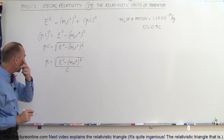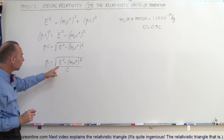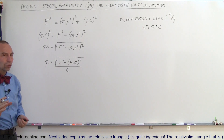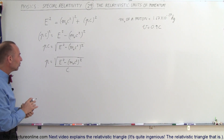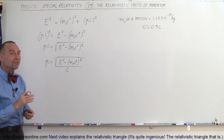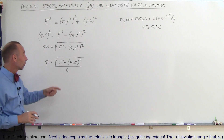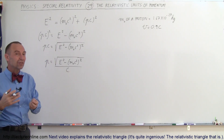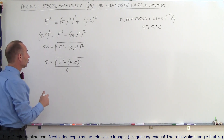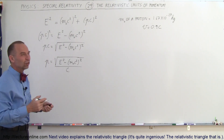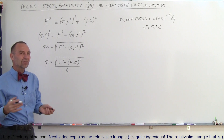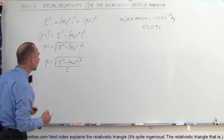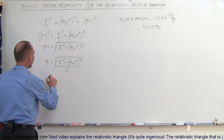What are the units of this equation? Notice that the units of energy would be MeV. The units of energy squared would be MeV squared. Typically, it's in the millions of electron volts — we'll just write MeV.